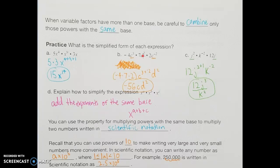On part B, I have two different variable terms: c and d. For the constants, I multiply negative 4 times 7 times 2 separately. For variables, I can only combine bases that are the same — so c to the 3rd times c to the negative 2nd: add the exponents, 3 plus negative 2, giving c to the first, or just c. Since there's only one d term, d squared stays as d squared. Multiplying the constants gives negative 56, so the answer is negative 56 times c times d squared.